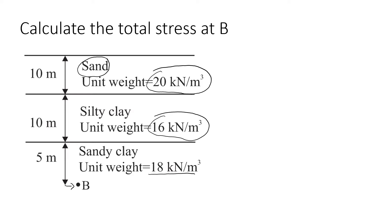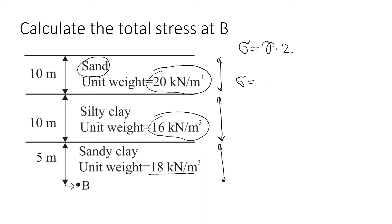We're going to use the formula that stress equals unit weight times z, working from the top layer downward and summing contributions at point B. Starting with the first layer, the total stress contribution is a unit weight of 20 times the thickness of this layer, which is 10 meters.